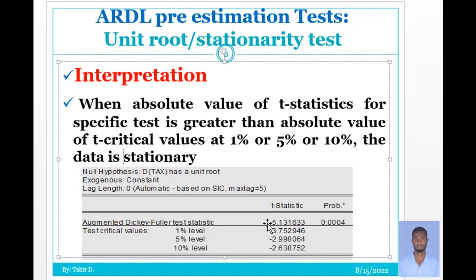The 'D' here indicates the first difference. The Schwarz information criterion is employed for lag selection, and the maximum lag is five.